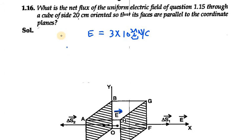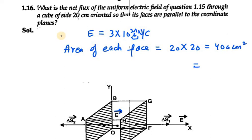Area of each face will be 20×20 = 400 cm². We need to convert centimeter square into meter square, so it will be 4×10⁻² m². This is the area of each face out of the six faces of the cube.